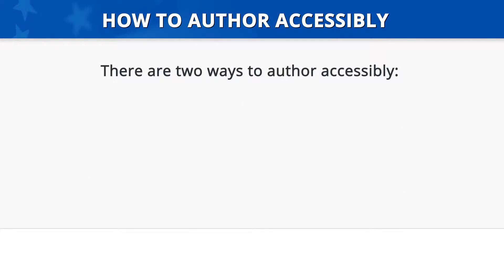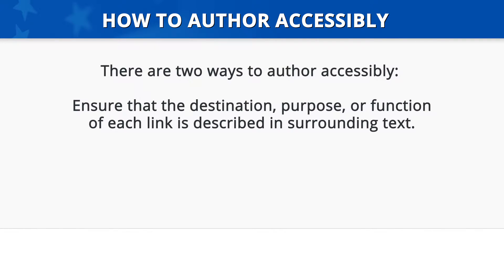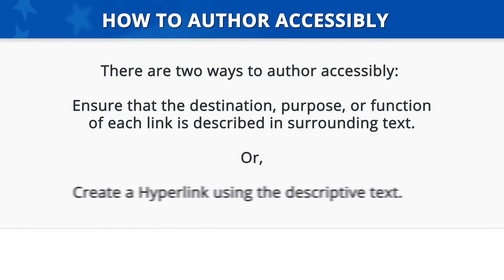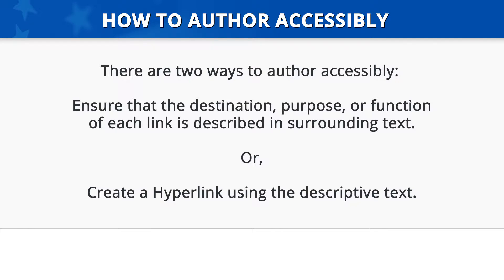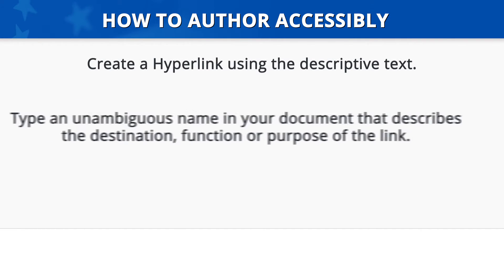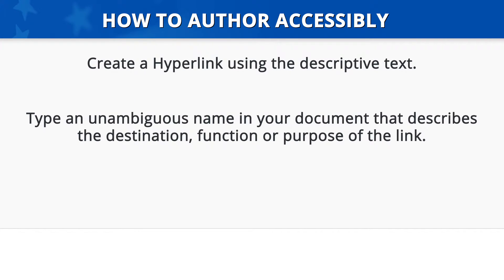How to Author Accessibly. There are two ways to author accessibly. One way is to ensure that the destination, purpose, or function of each link is described in the surrounding text. The other way is to create a hyperlink using the descriptive text. To create a hyperlink, first type an unambiguous name in your document that describes the destination, function, or purpose of the link.